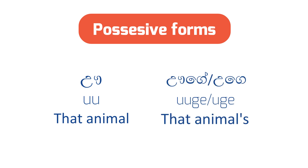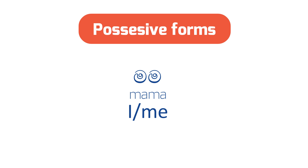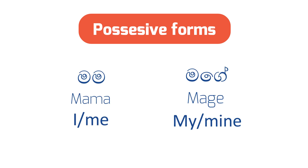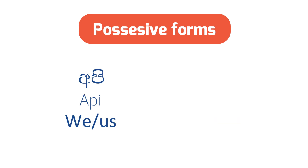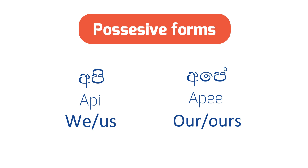Ooo becomes uge or uge, meaning that animal's. When we add something to mama, we remove the last ma and add ge, so it becomes mage. Mage means my or mine. Api is also an exception — api changes to ape. Api means we and ape means our or ours.